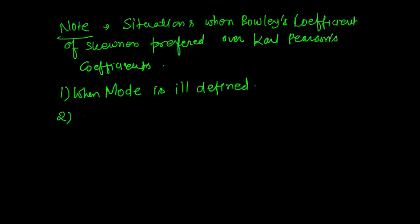When extreme observations are present, then we can't calculate the mean value, so we can use Bowley's coefficient because it depends on quartile values.